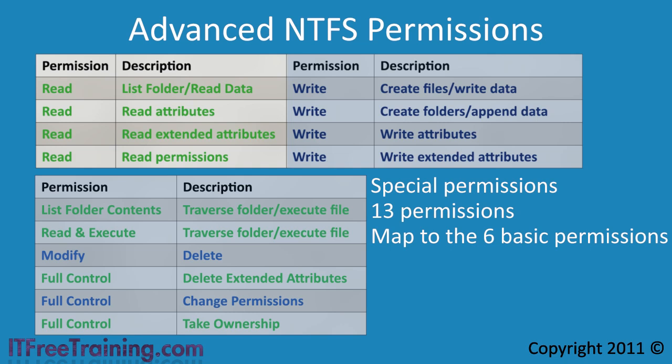The next permission is the read attributes permission. This gives the user the ability to read the basic attributes of a file or folder, including the read only, hidden and archive attributes. The next advanced permission set when selecting the basic read permission is read extended attributes. Extended attributes are set by programs and may vary from program to program. The last permission set when selecting read is read permissions, which allows the user to read the NTFS permissions but not make changes.